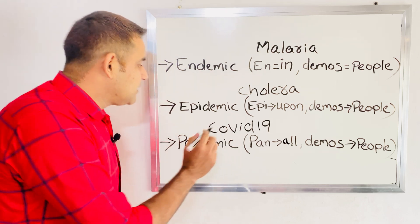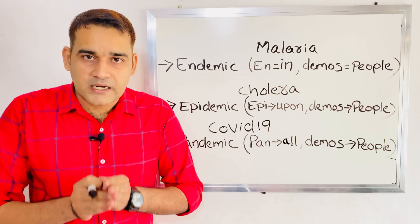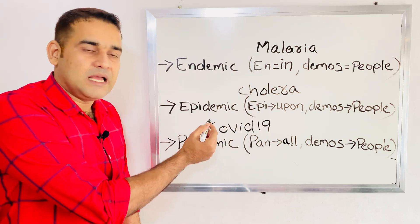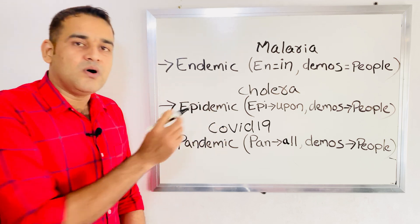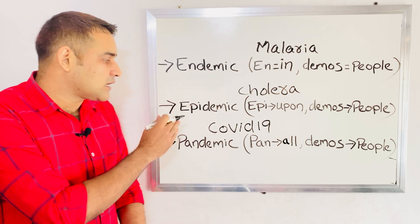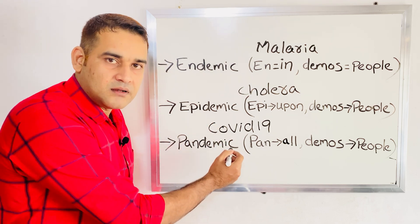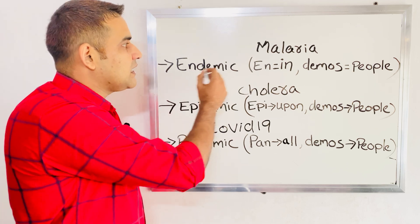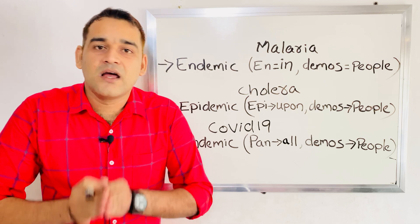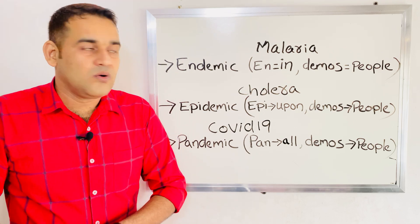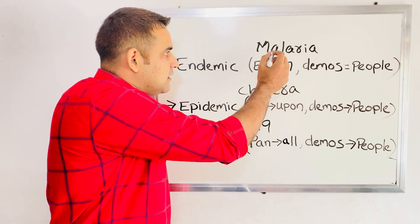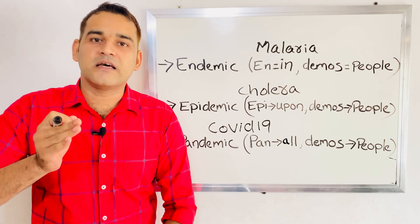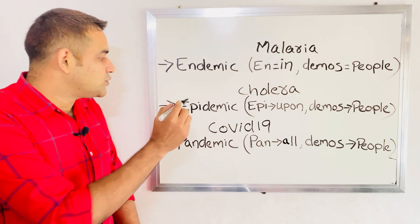Pandemic means an epidemic that has spread from one country to another country or all over the world. COVID-19 was initially an epidemic in China, but it spread to other countries and all over the world, making it a pandemic. One important thing to keep in mind: an endemic can also become an epidemic. For example, malaria cases in India are constant, but if due to some factors the outbreak increases more than normal expectation, then it moves to epidemic.